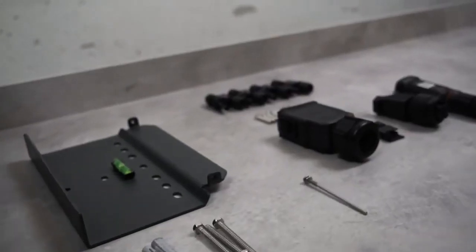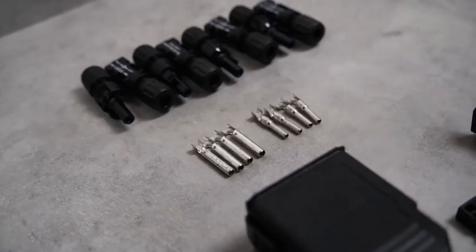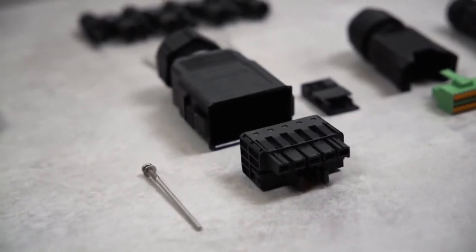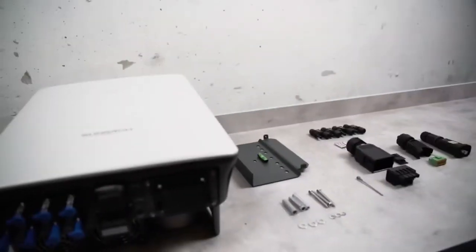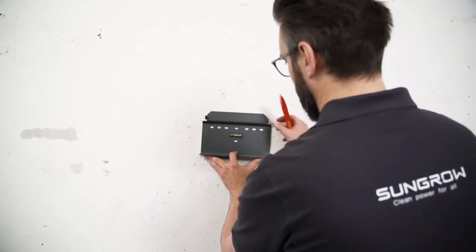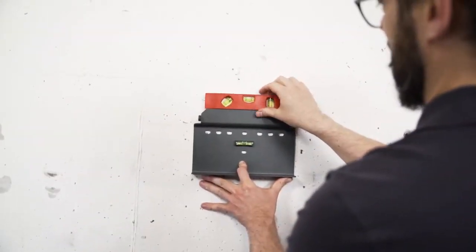All screws and plugs required for the installation are already included in the delivery. You only need your own tools like screwdrivers. And off we go! Luckily, you don't need a spirit level. SunGrow has it integrated in the mounting plate.